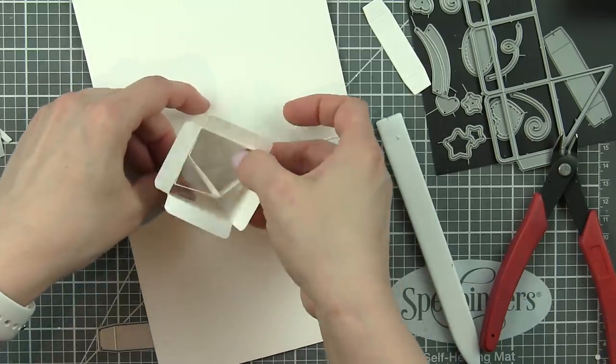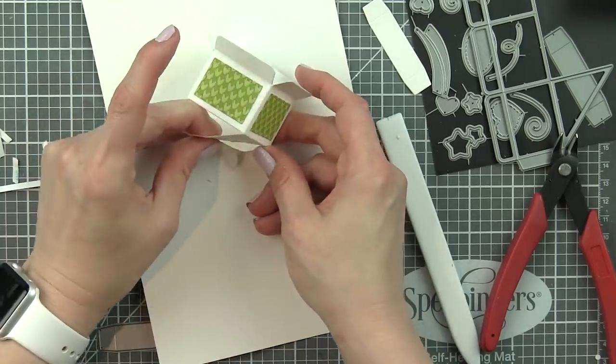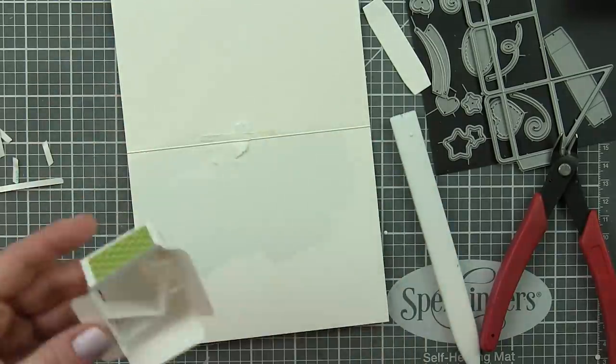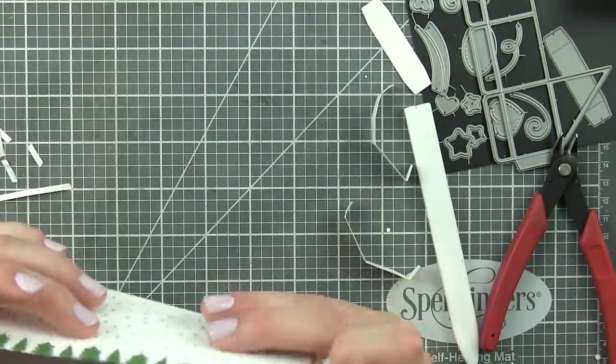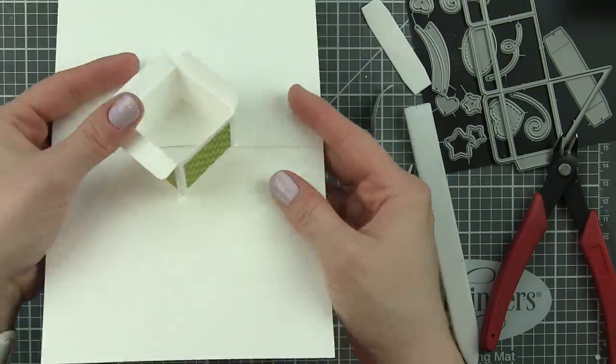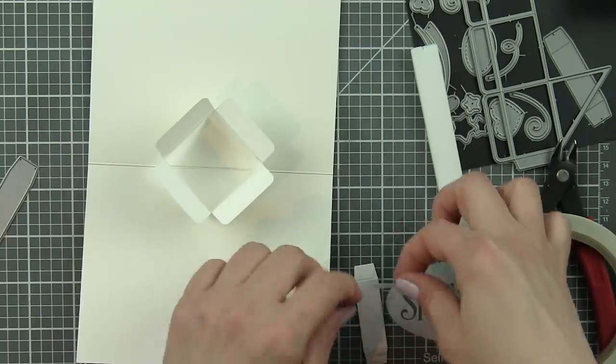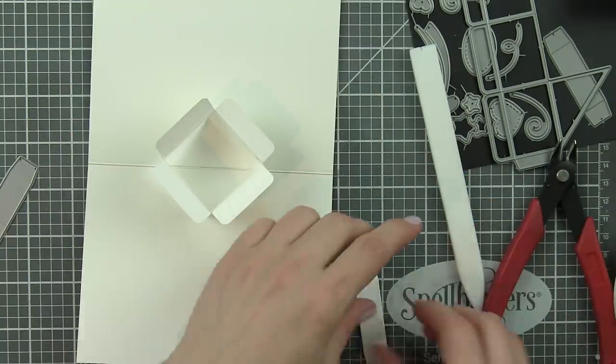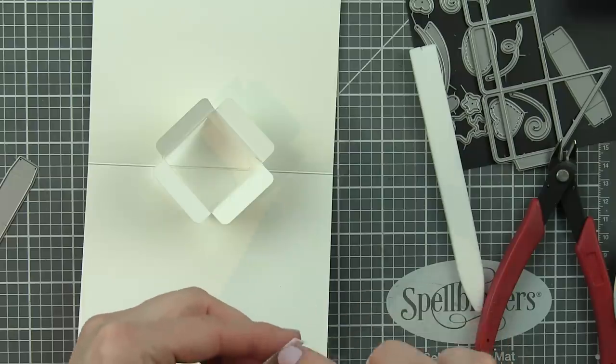If I was going to open this more like a book I would have used those and I will be sharing another card with those later on. But you just simply straddle those triangles around the seam of your card. Press that down in place and when you fold it, it folds flat.